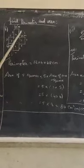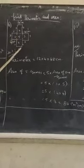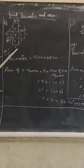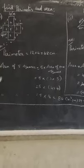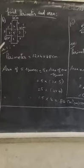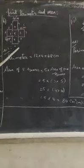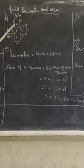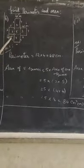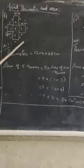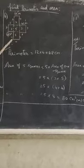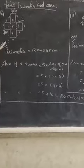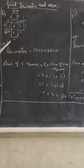Dear students, see problem number 6: find the perimeter and area of the given figure. You can find out the combined perimeter and area. Perimeter means you add all the outside closed portions. Here, 4 centimeters, 4 centimeters, and 4 centimeters — totally how many portions are there? The closed outside portion is 12.